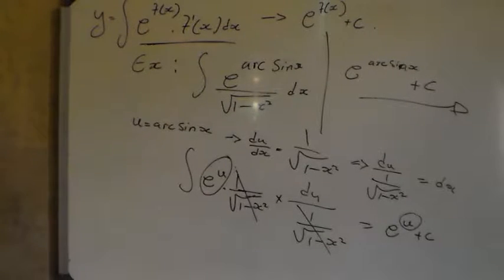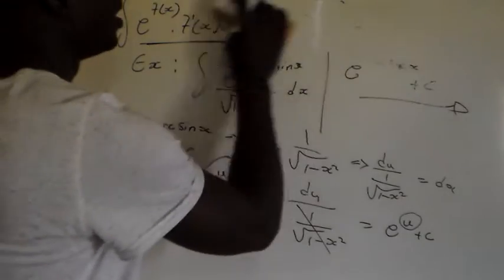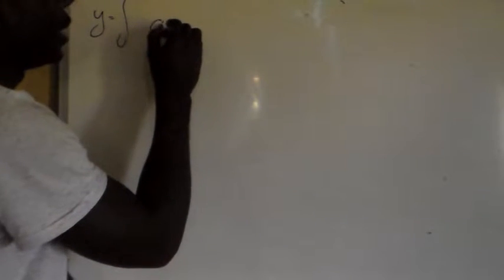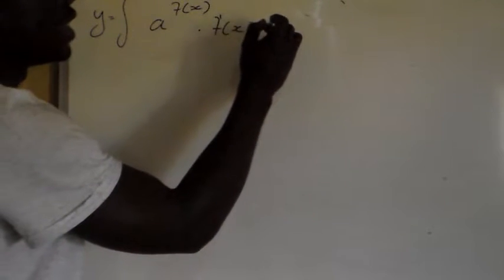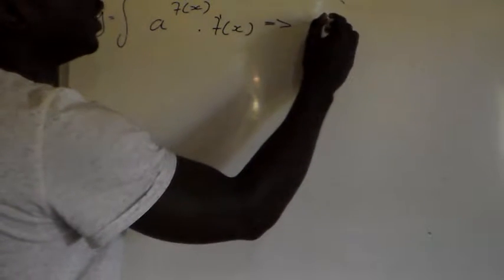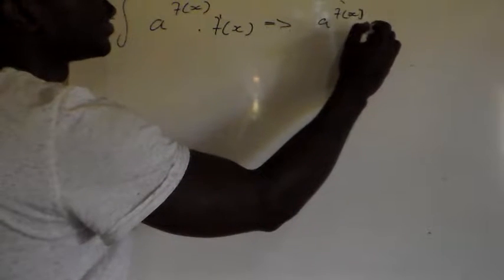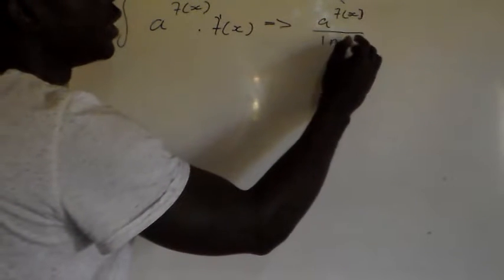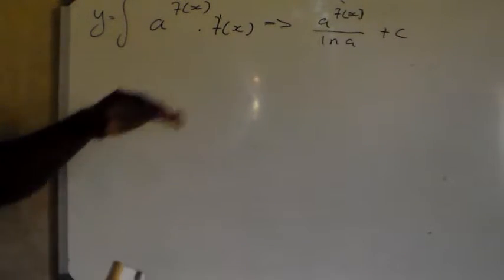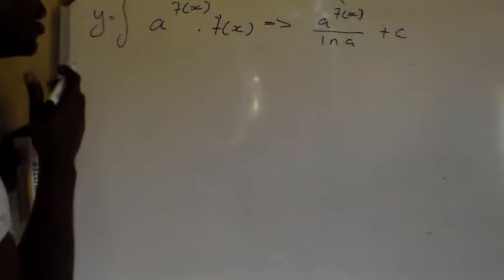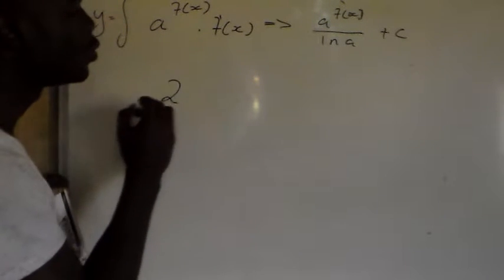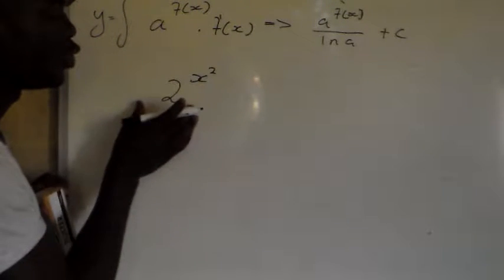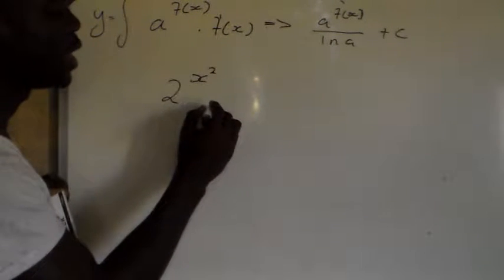Then we have another method. If you have a to the power f of x multiplied by the derivative of f of x, it still is the same type, which is going to give you a to the power f of x divided by ln a plus C. For example, if you have a to the power x squared multiplied by x.